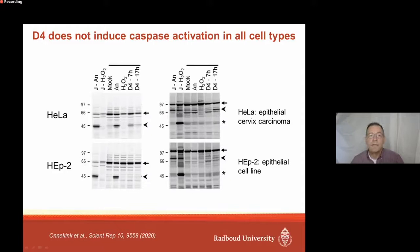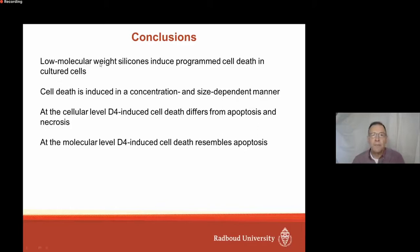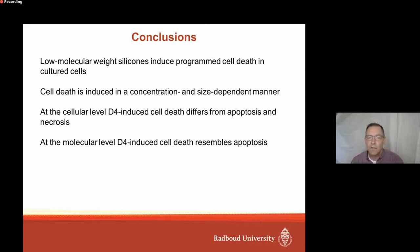This brings me to the conclusions. Low molecular weight silicones induce programmed cell death in cultured cells. Although not all cells are equally sensitive to these silicones, it is induced in a concentration- and size-dependent manner - the smaller the silicone, the more efficiently the induction of cell death occurs. At the cell level, D4-induced cell death is different from apoptosis and necrosis - the morphology changes and the flipping of phospholipids are different from what is seen in apoptosis. But at the molecular level, there are very clear similarities with molecular events that occur in apoptotic cells.